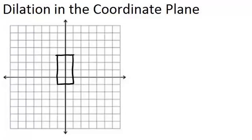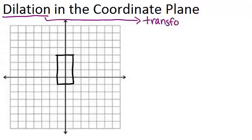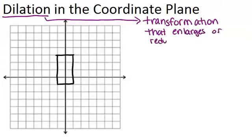In this video, we are going to learn about dilations in the coordinate plane. First, let's review what a dilation is. A dilation is a type of transformation, which means that it's an operation that you can perform on an object or a line segment. And this type of transformation enlarges or reduces a shape, meaning it makes it bigger or it makes it smaller.